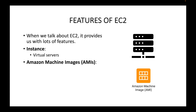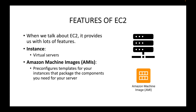Then you have AMIs, which stands for Amazon Machine Image. Whenever we want to launch our servers, we need to specify the operating system, network capacity, storage type — all that information is pre-built or pre-configured into an AMI. These are pre-configured templates we can use whenever we want to launch EC2 virtual machines on the AWS platform. They are blueprints readily available for us, containing information like which operating system you want to use.